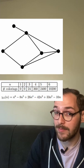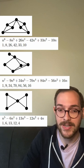Amazingly, for any graph, there's an incredibly simple formula. It'll be given by a polynomial called the chromatic polynomial.